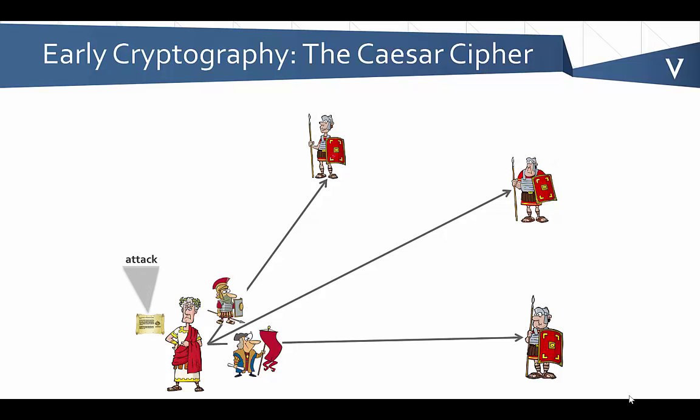So for example, if he wanted to send a message such as 'attack', what he did was he looked at the alphabet and said, instead of just using the alphabet as everybody would expect, when we're going to write down the message, let's go ahead and shift the letters of the alphabet by three, so that an A becomes a D, and a B becomes an E, so on and so forth, so that ultimately the message was not intelligible to the common observer or somebody that would have intercepted the message.